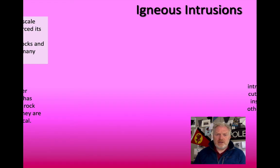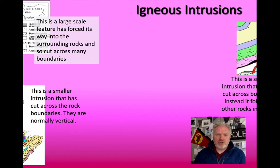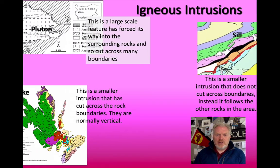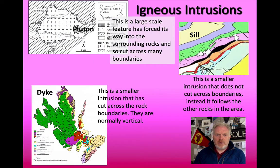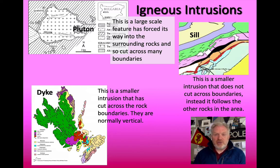There are three types of intrusion that we need to be aware of: plutons, dykes, and sills. We recognise these in terms of both their shape and their relationship with the rocks around them.